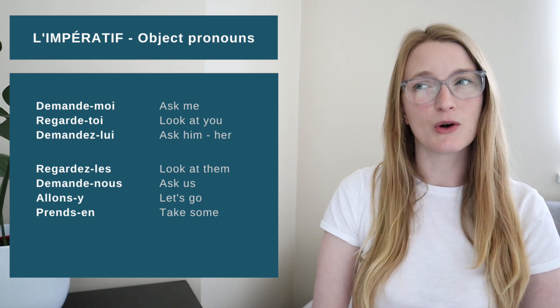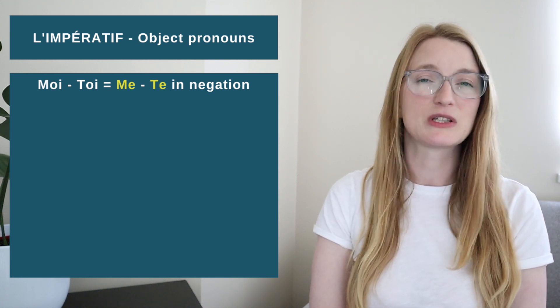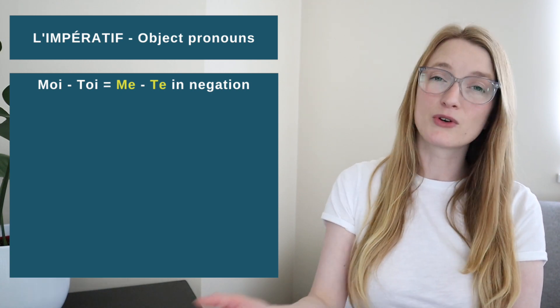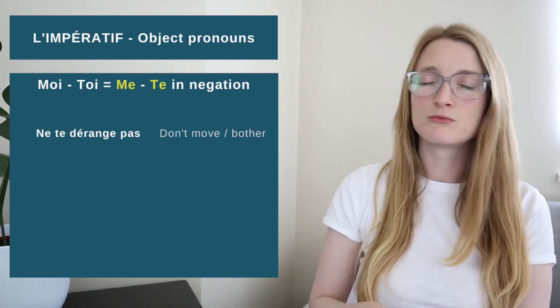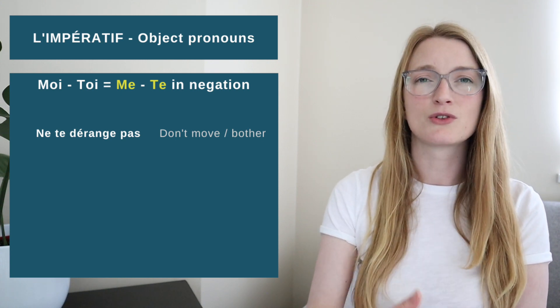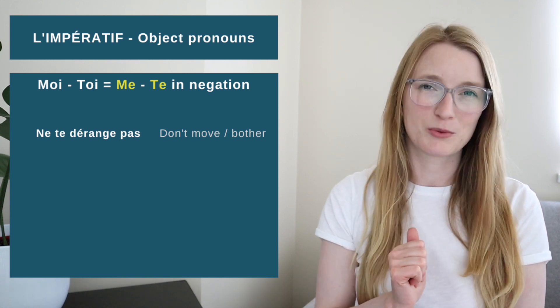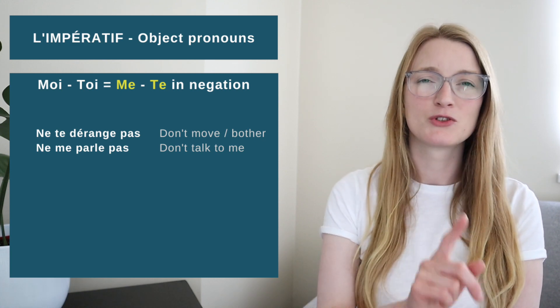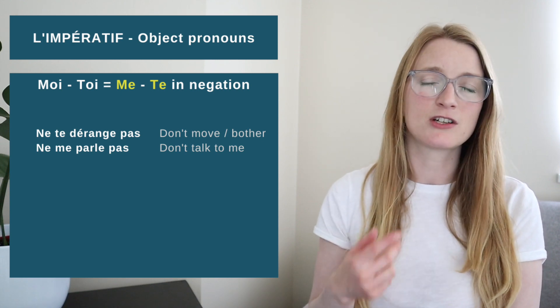But if we see the negation, the negation is really easy. We saw that yesterday. The only point is that the pronoun is going to go back before the verb. And obviously Moi and Toi are going to go back to Me and Te. So don't bother with Tu: Ne te dérange pas. Don't talk to me: Ne me parle pas.